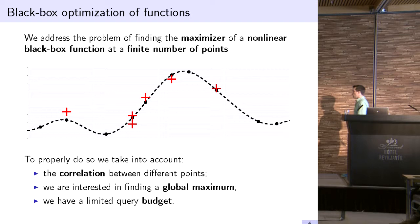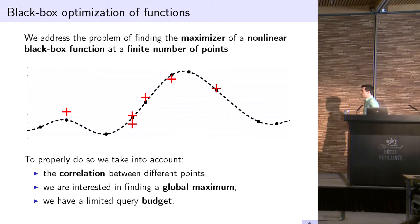Another application we focus on is black box optimization of functions. In particular, we address the problem of finding the maximizer of some nonlinear black box function at a finite number of points. Here I've illustrated using this dashed line the function I'm trying to optimize, and I'm looking specifically at a collection of finite points denoted with dots. The red x's are my actual noisy function evaluations. To properly do so, we want to take into account the correlation between these different points. We're interested in finding the global maximum.